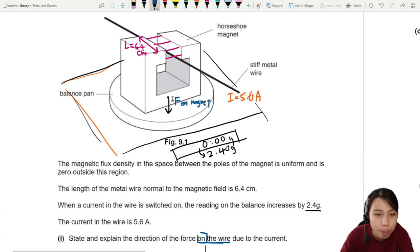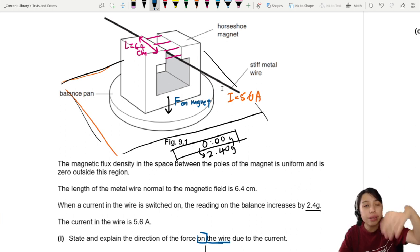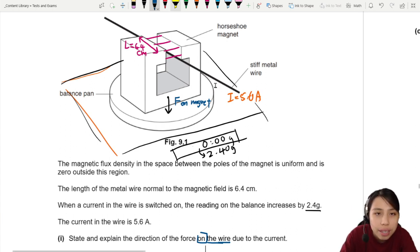But we do know this. Force on magnet downwards. So if the magnet is being pushed down, is being repelled downwards. Means the magnet is also pushing the wire upwards.